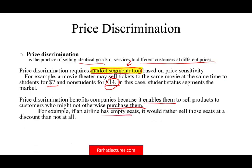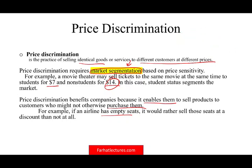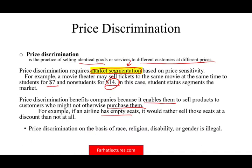Price discrimination benefits companies because it enables them to sell products to customers who may not otherwise purchase them. For example, if an airline has empty seats, it would rather sell those seats at a discount than not at all — someone next to you might have paid $400 while you paid $600. That's supply and demand, not any discriminatory reason. However, price discrimination based on race, religion, disability, or gender is illegal.